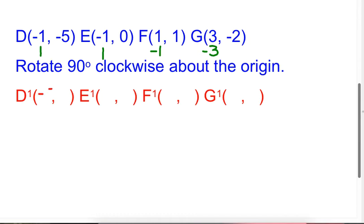So looking at D prime, I'm going to have a negative five, positive one. See, they kind of like crisscross. For E prime, it's going to be zero, one. F prime is going to be one, negative one. And G prime, negative two, negative three. And if I were to plot those points, and compare them to the original points, and draw the shapes, you would see that that shape turned 90 degrees, clockwise about the origin, a fourth of a turn of a full circle. Okay, so that's part of our learning target.